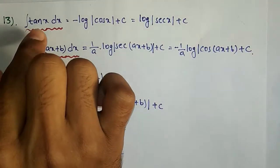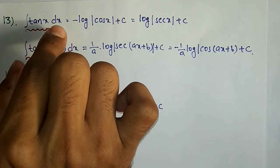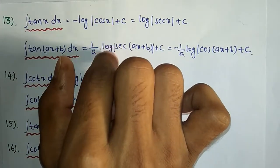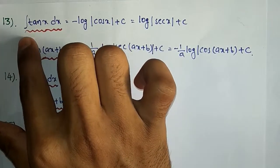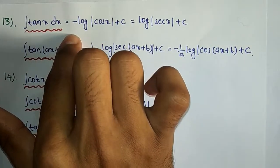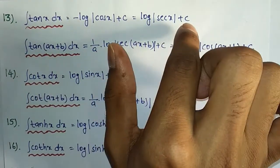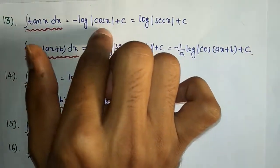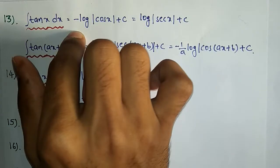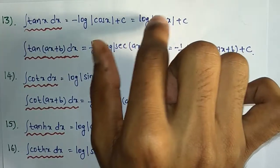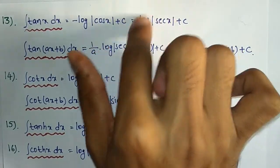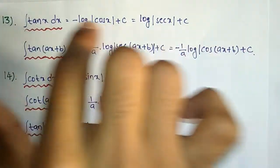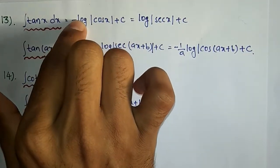Integration of tanx dx is equal to minus log|cosx| plus C. This is also written as log|secx| plus C. We can use either log of cosine or secant form.